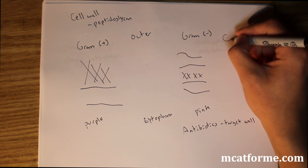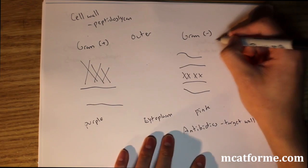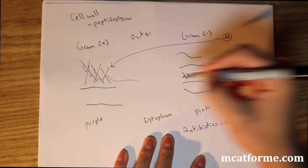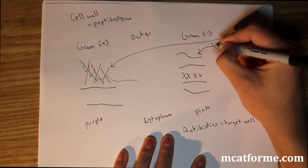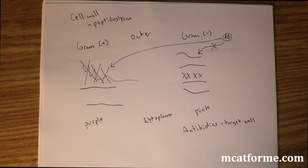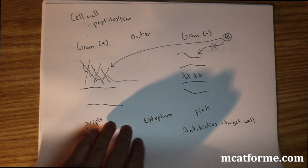And so if we had some type of antibiotic that attacked the peptidoglycan layer and broke it all up, it would work on gram positive. But if we try to do it on the gram negative, nothing would really happen. It would be a lot less effective because we have this outer membrane that's blocking everything. So that's very important to remember later on in those passage based questions.